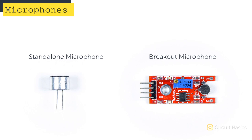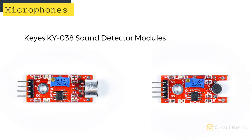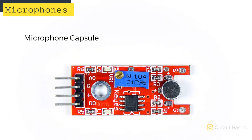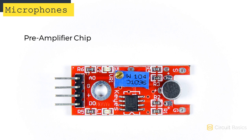Like a lot of other Arduino components, you can get Electret microphones as a standalone unit or attached to a breakout board. These are KEYS KY038 sound detector modules. This is the microphone capsule.